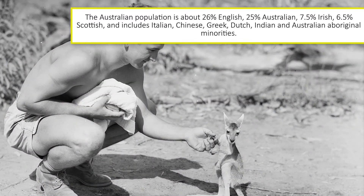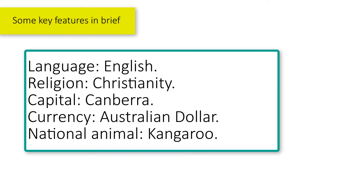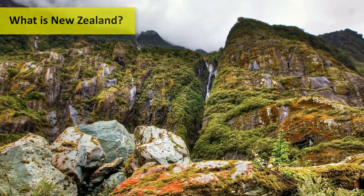Some key features of Australia in brief: language — English; religion — Christianity; capital — Canberra; currency — Australian dollar; national animal — kangaroo.